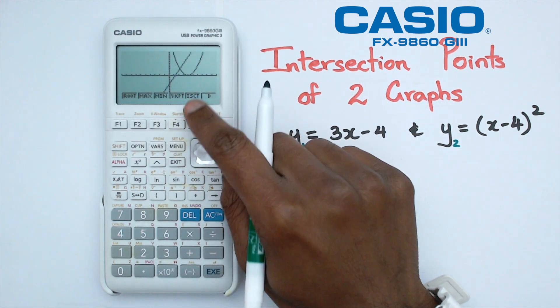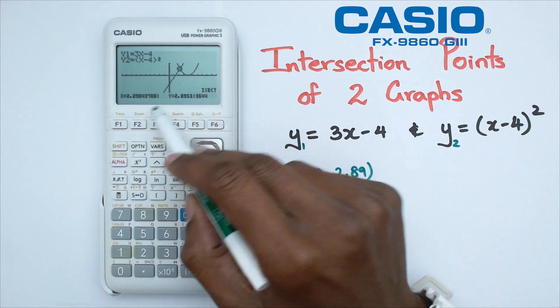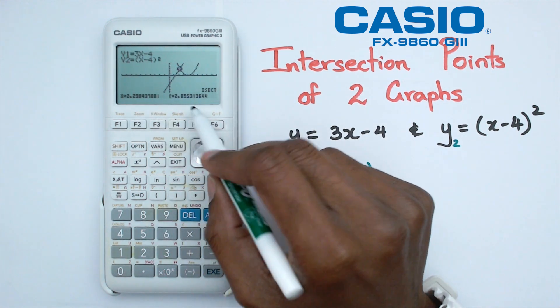What that happens is that it actually changes the view here. But when I go back to G-solve and find the intersection points, here's my first point, which is 2.29 and 2.89.